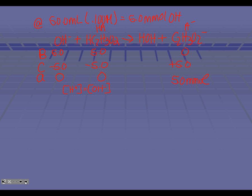This is not going to be a Henderson-Hasselbalch because we don't have any HA left. Our pH is going to be based off of how much conjugate base we have present. We need to come up with a new molarity, which requires a new volume: 50 milliliters of acid plus 50 milliliters of base gives us 100 milliliters. That makes our new molarity of A minus equal to 0.05 molar of our conjugate base.